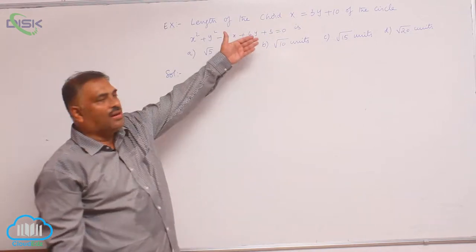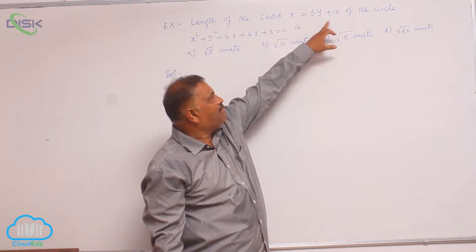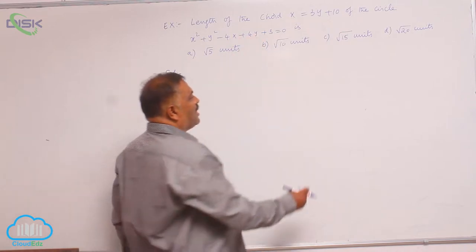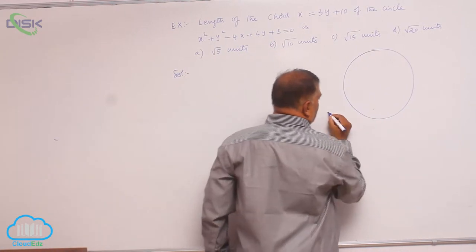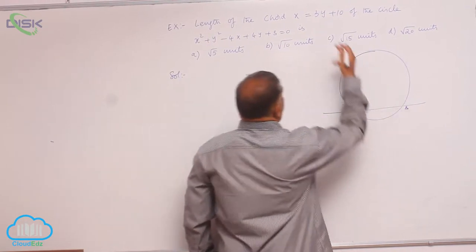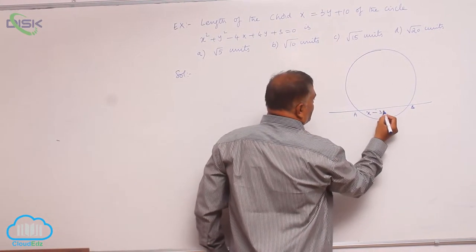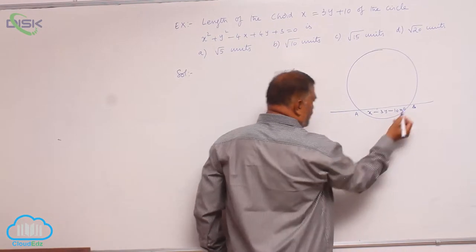We will find out the length of the chord x equals 3y plus 10 of this circle. We know this formula, and this is the circle equation. The chord AB is given by the straight line x minus 3y minus 10 equals 0.